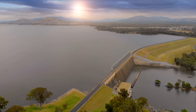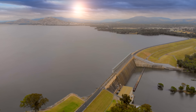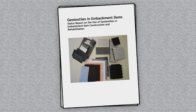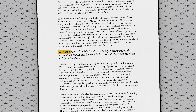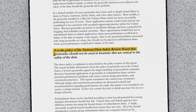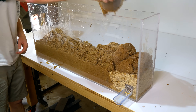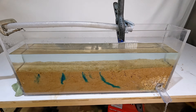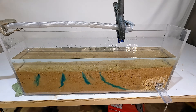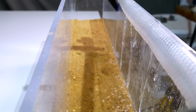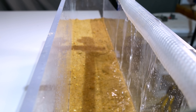For embankment dams built from compacted soil, any movement of those soil particles can spell demise. That's why they use filters of a different design. It's the policy of the National Dam Safety Review Board that geotextiles should not be used in locations that are critical to the safety of a dam. Instead, they use sand. Just like the gravel in my demonstration lets water through while holding back the sand particles, sand can hold back smaller particles of silt and clay, acting as a filter.